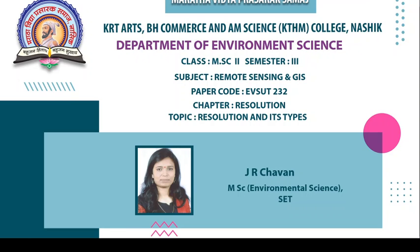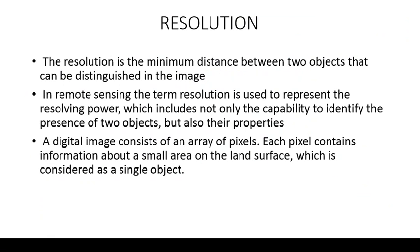Let's start with our next chapter: resolution. Resolution is the minimum distance between two objects that can be distinguished in an image. Resolution is mostly related to image capturing — after capturing a particular image, how clear it can be seen is dependent on the resolution of that sensor or camera. Whether it looks blurry or clear is dependent on the size of the pixel.